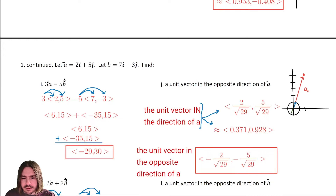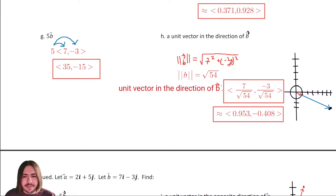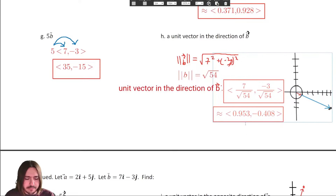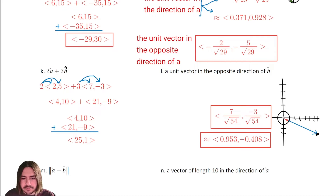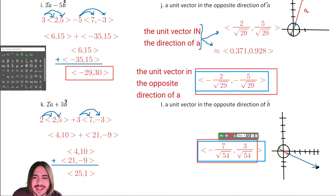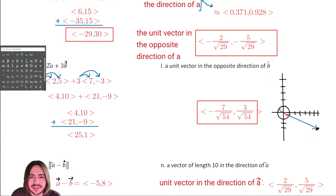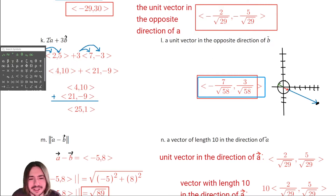Letter L asks for the unit vector in the opposite direction of B. We already found the unit vector in the direction of B. Since B's components are positive and negative, the opposite direction flips both signs. As a consequence of the earlier correction, the answer should be negative seven over root fifty-eight comma positive three over root fifty-eight.